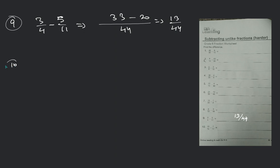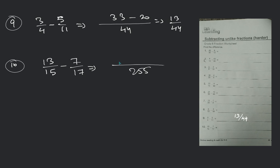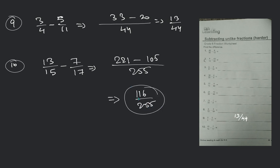Now the last question: 13 by 15 minus 7 by 17. Multiply both denominators — you will be getting 255. 17 into 13 = 221, minus 15 into 7 = 105. 105 minus 221 — you will be getting 116 divided by 255. This will be your final answer: 116 divided by 255.